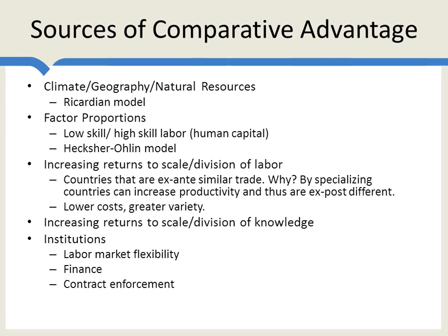Contract enforcement is another institutional factor. In some countries it's very difficult to enforce contracts, so they tend to specialize in production that doesn't require a big division of labor or division of knowledge — things that can be done within one family or one smaller firm, or where fewer contracts are required. If you require a greater division of labor across more firms, more parts of the country, and more people, you'll want to be in a country with better contract enforcement. So for all of these reasons, these are all sources of comparative advantage.